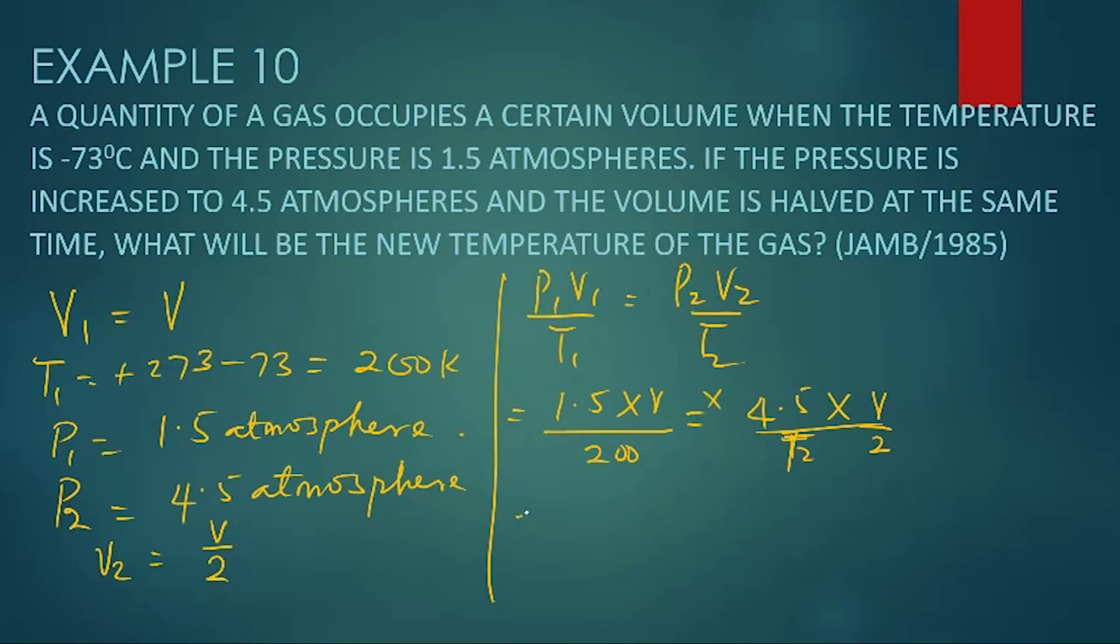Therefore, you cross-multiply. We have 200 times 4.5 times V equals 1.5 times V times 2 times T2. Now V cancels V here. Then we have 200 times 4.5 equals 1.5 times 2 gives you 3T2.